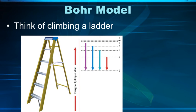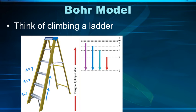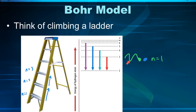Think of this like climbing a ladder. To make a jump from one rung to the next — from n equals 1 to n equals 2 — it's an all-or-nothing thing. You have to have enough energy to make it to the next level, or you don't go up a step. If a photon hitting an electron doesn't have enough energy to go from n equals 1 to n equals 2, it stays at n equals 1. If it does have enough energy, it makes the jump to n equals 2 or n equals 3, depending on how much energy is in that photon.